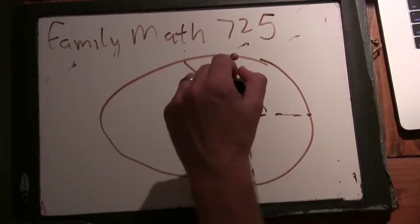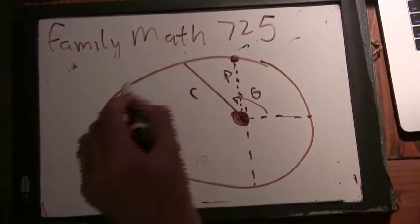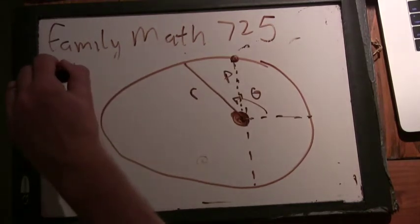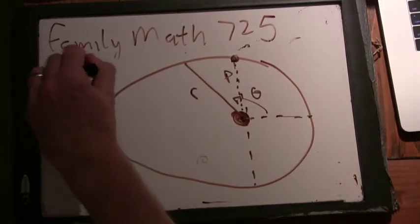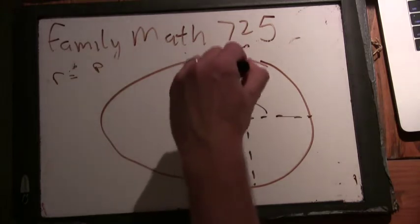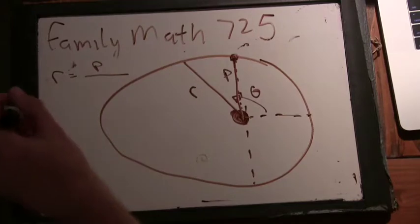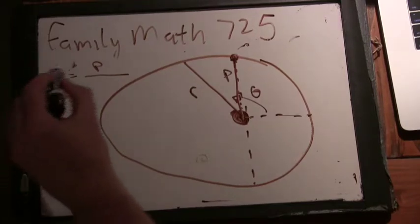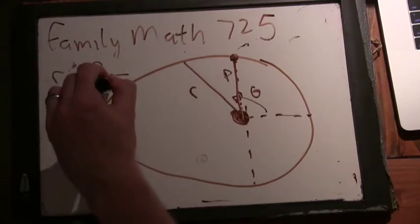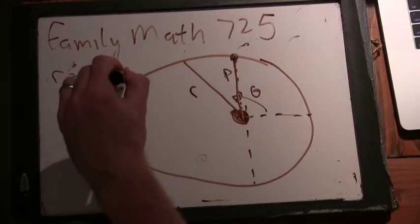The equation for this ellipse is r equals this constant, this is a constant distance here, over 1 plus epsilon cosine theta.